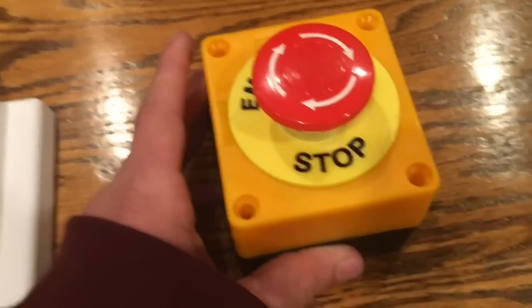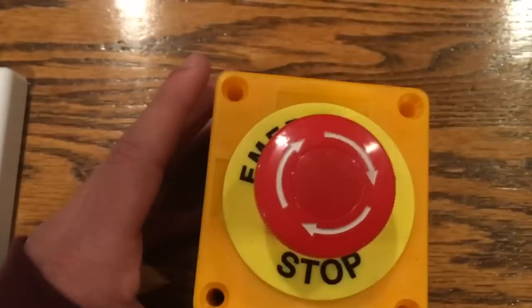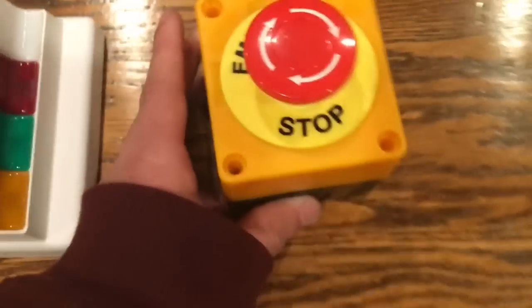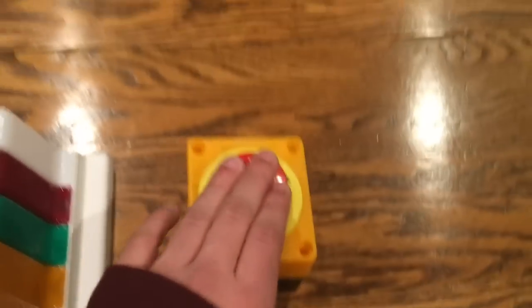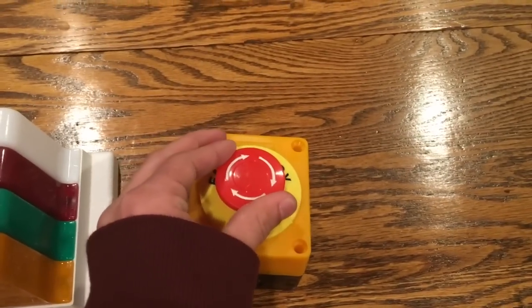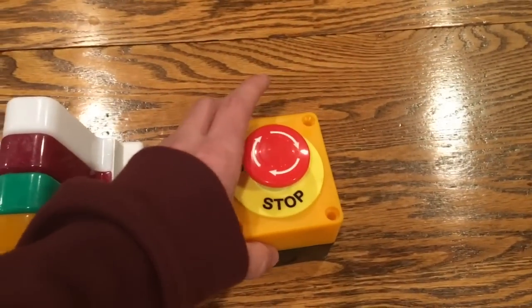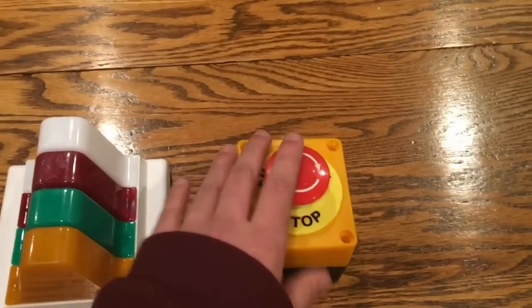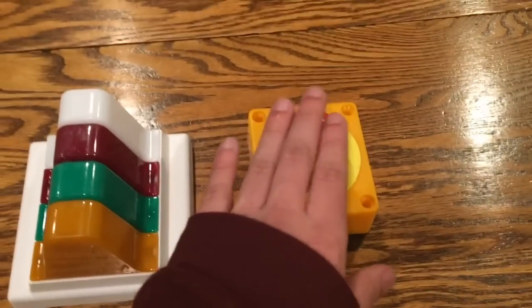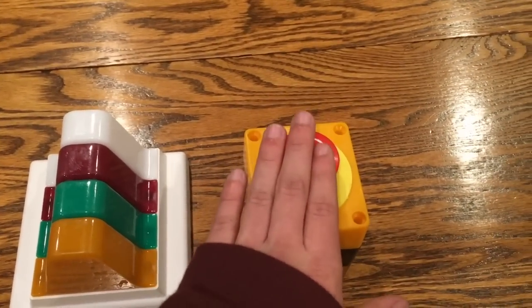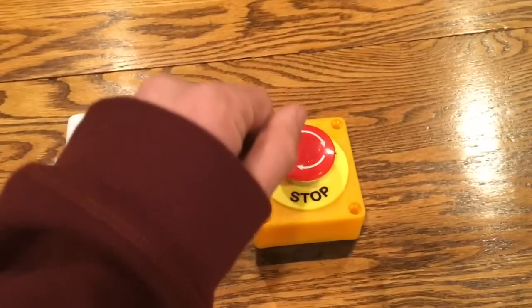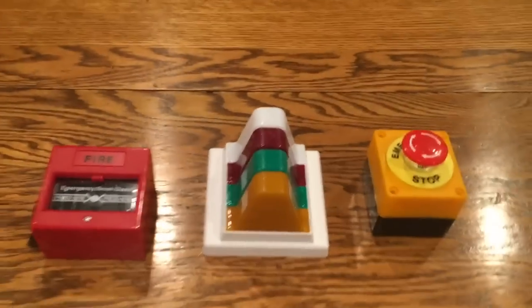And then here I got an emergency stop button. To activate it, you just push it. Then to reset it, you just turn it, and it automatically resets like that. And it's kind of like the ones you see on treadmills, where you just stop the treadmill, the exercising treadmill. You push the button, then you turn it and reset it.